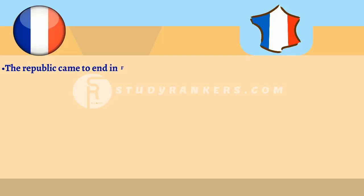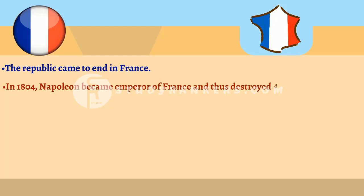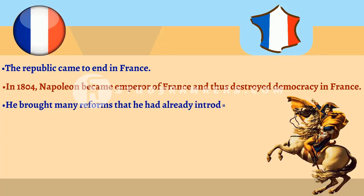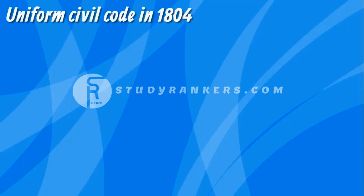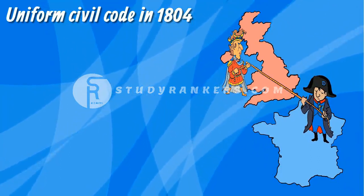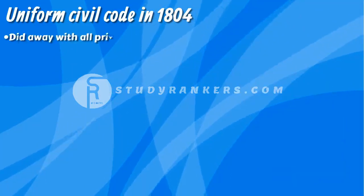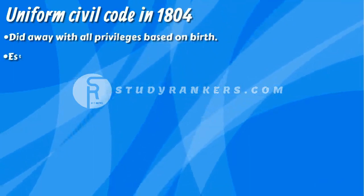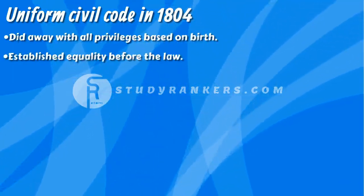But the republic came to an end in France, and in 1799, the French Revolution ended and Napoleon Bonaparte rose to power. In 1804, he became Emperor of France and thus destroyed democracy in France. He further expanded his empire and brought many reforms that he had already introduced in France. He introduced the Uniform Civil Code in 1804, popularly known as the Code of Napoleon, which did away with all privileges based on birth, established equality before the law, and secured the right to property.